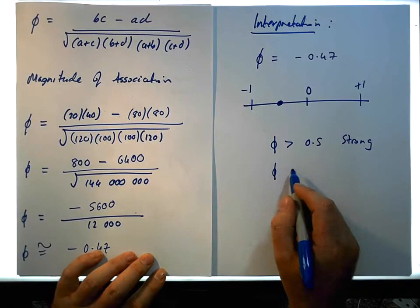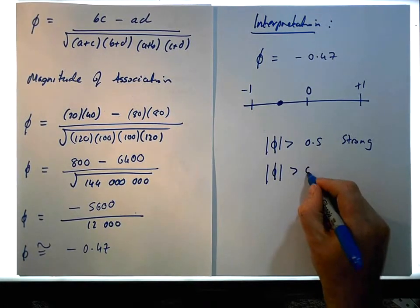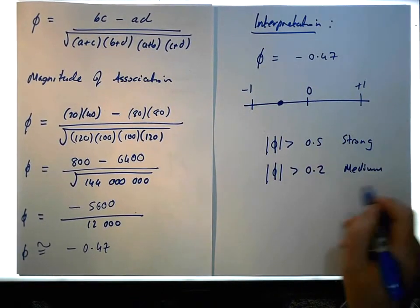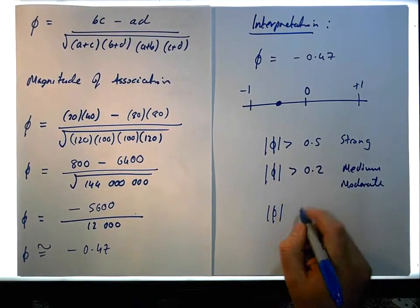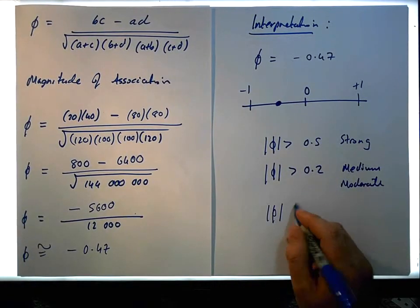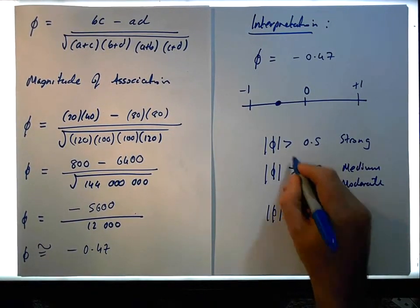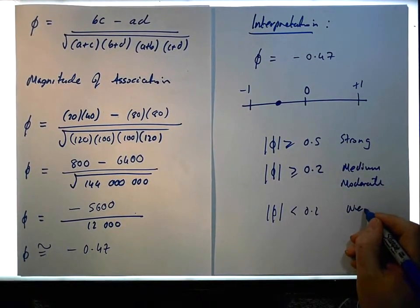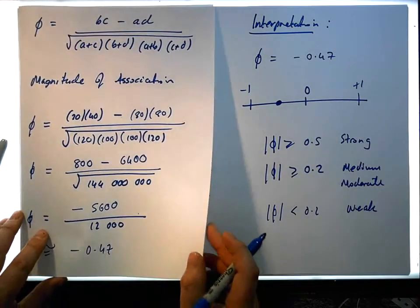If the absolute value of phi is bigger than 0.2 but not bigger than 0.5, we say there's a medium or moderate correlation. And if it's less than 0.2, we say there's a weak or no correlation between the two variables.